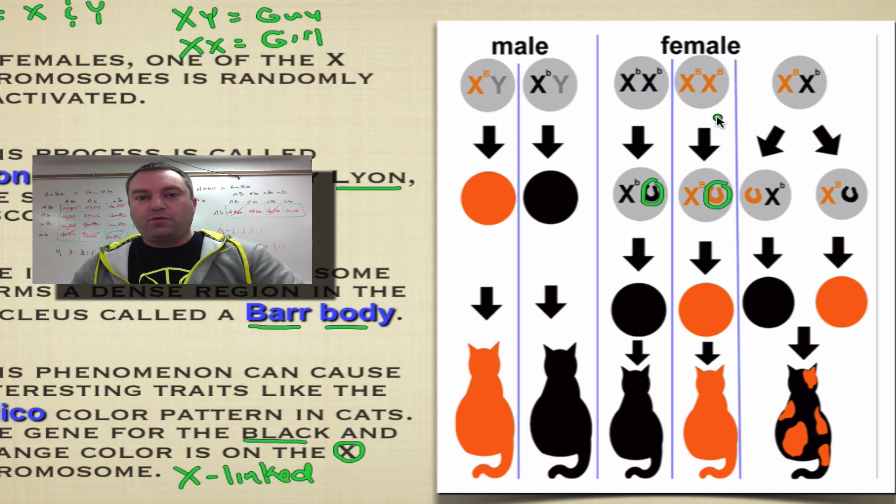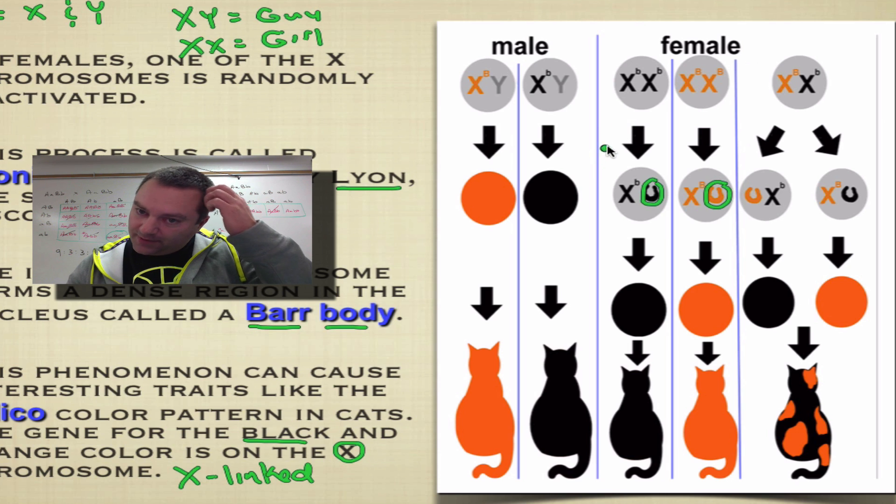Over in the girls, we get three different phenotypes. If you're homozygous for the little b, in other words if you're homozygous for the black allele, that is going to be a black cat. What's going to happen in this chromosome inactivation is, at random, one of these X chromosomes is going to be inactivated.